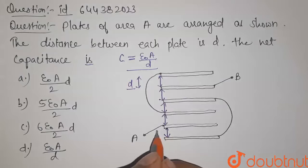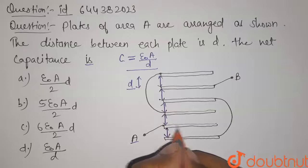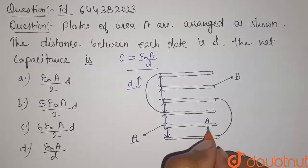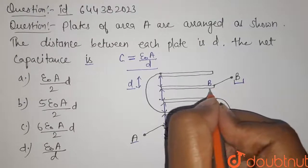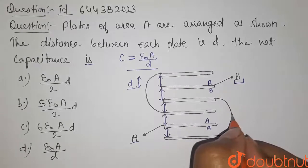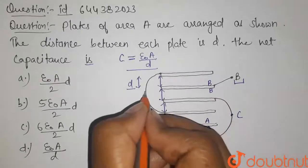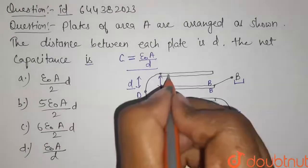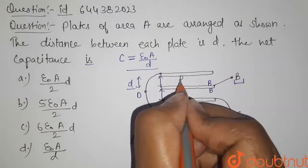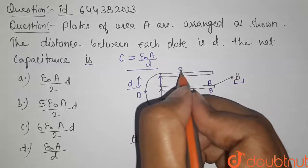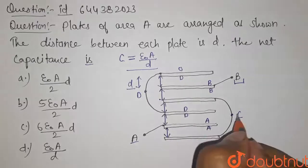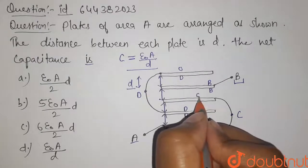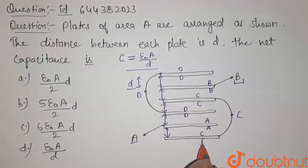Now let us take the potential at point A to be A — so here the potential will be A, and here also the potential will be A. Similarly for B, the potential here will be B and here will be B. Now let us take this point to be C and this point to be capital D. The potential inside will be D and outside it is 0. For this plate, potential will be D here and also D. For point C, here it will be C, here C, here C, and here 0.